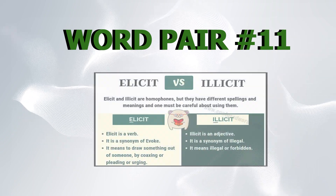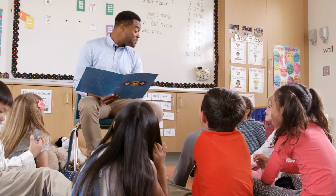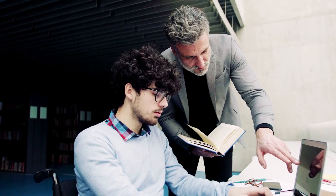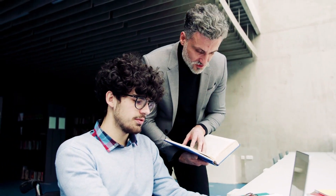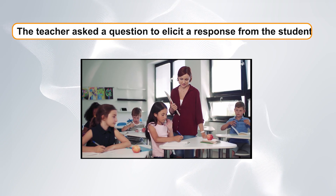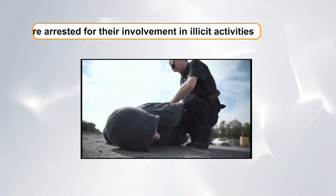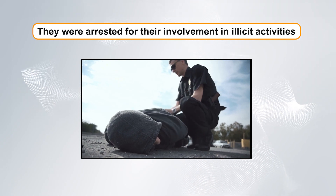Word pair number eleven: elicit versus illicit. Moving on to elicit and illicit. Elicit is a verb that means to draw out a response or reaction, while illicit is an adjective that means illegal or forbidden. Example sentences: One, the teacher asked a question to elicit a response from the students. Two, they were arrested for their involvement in illicit activities.